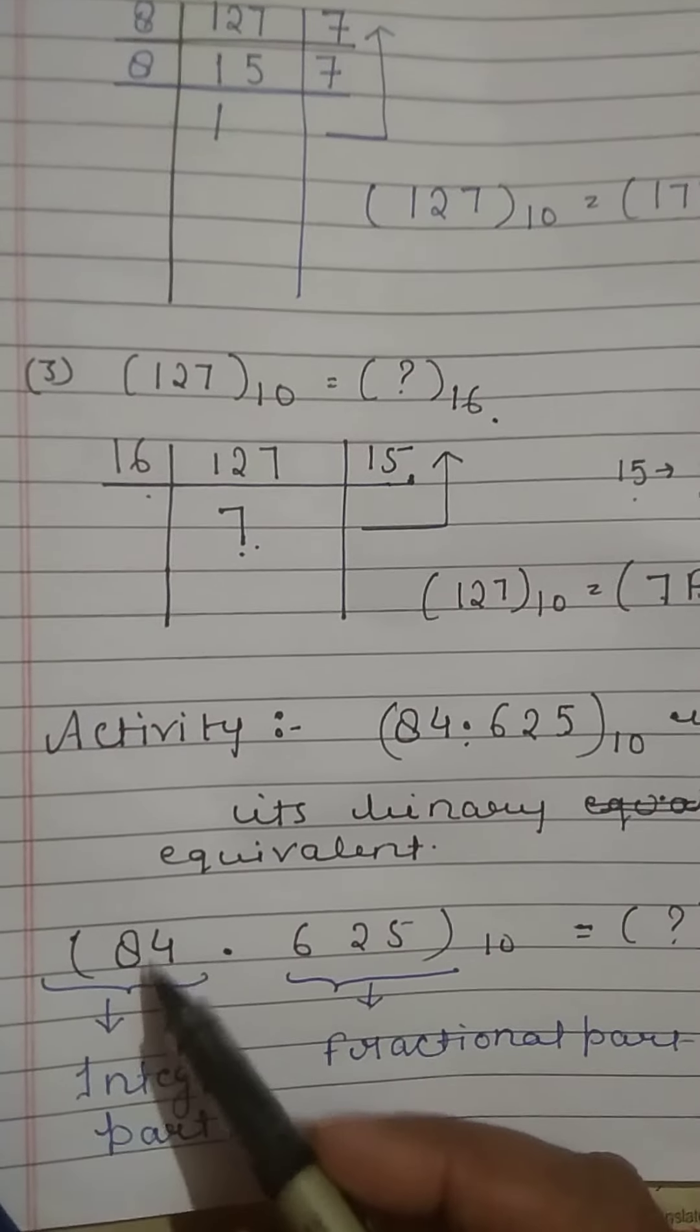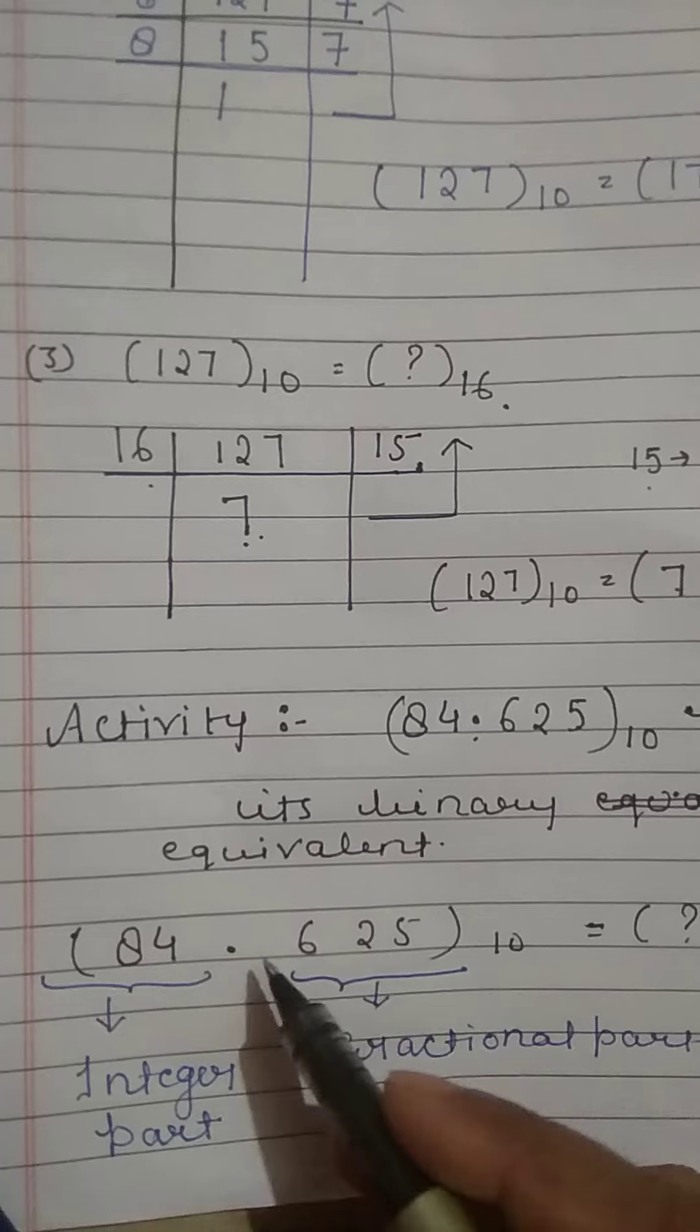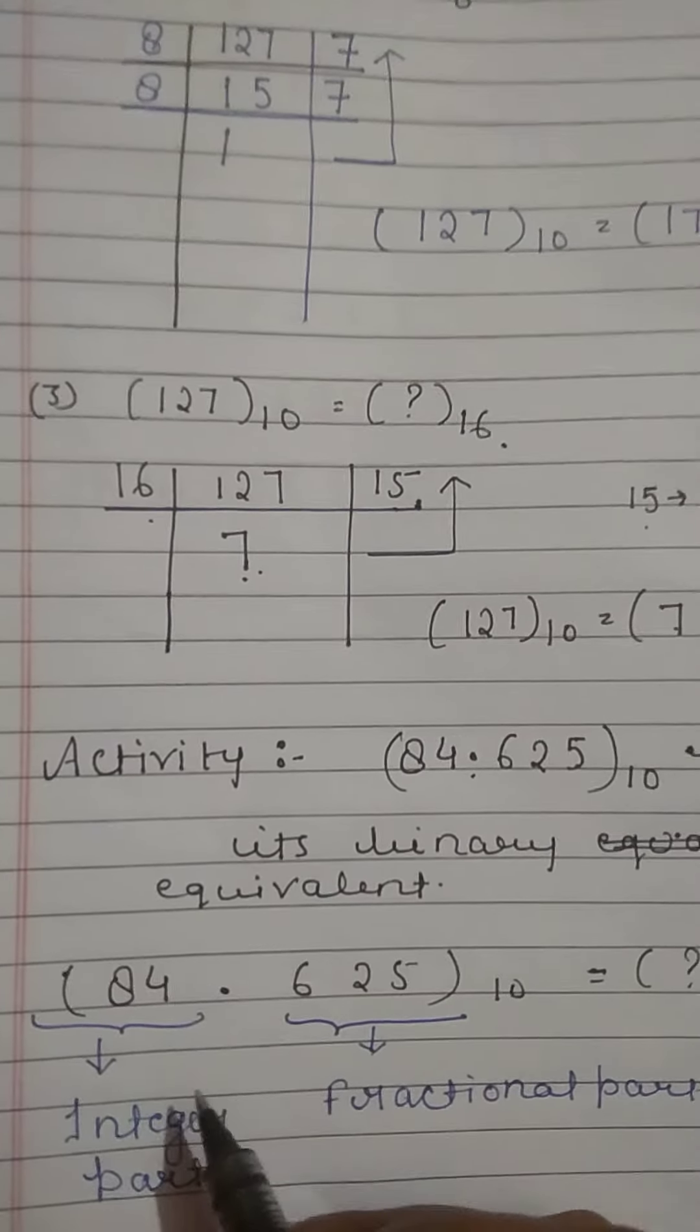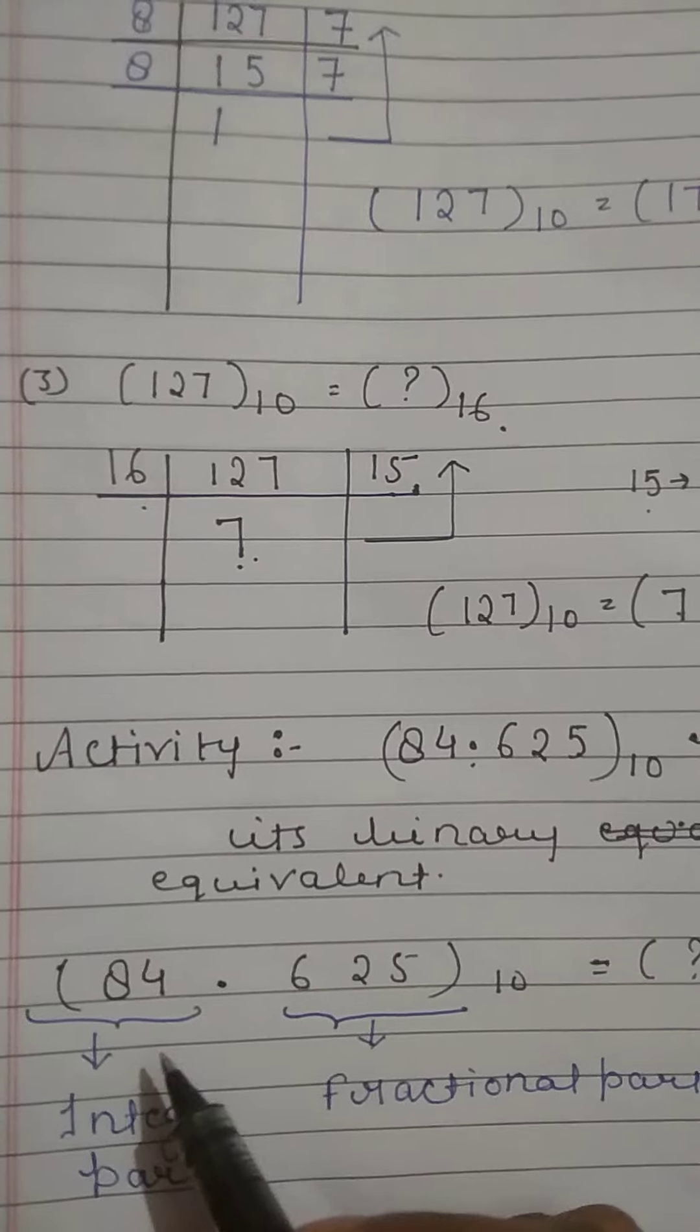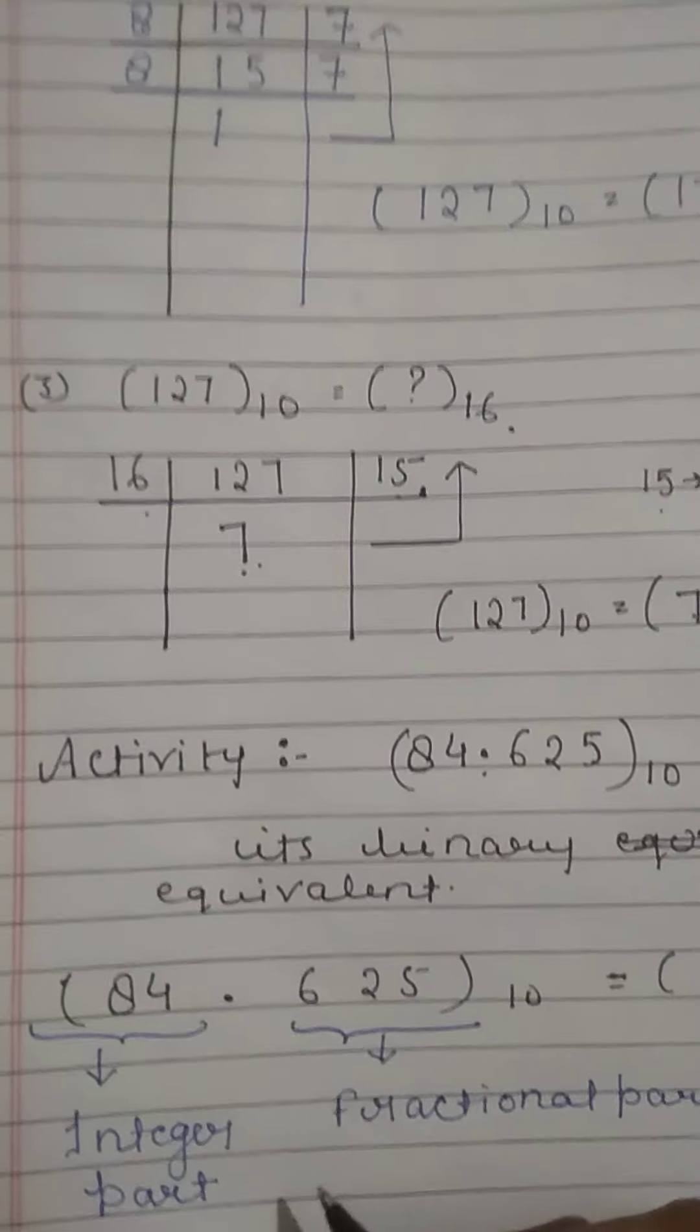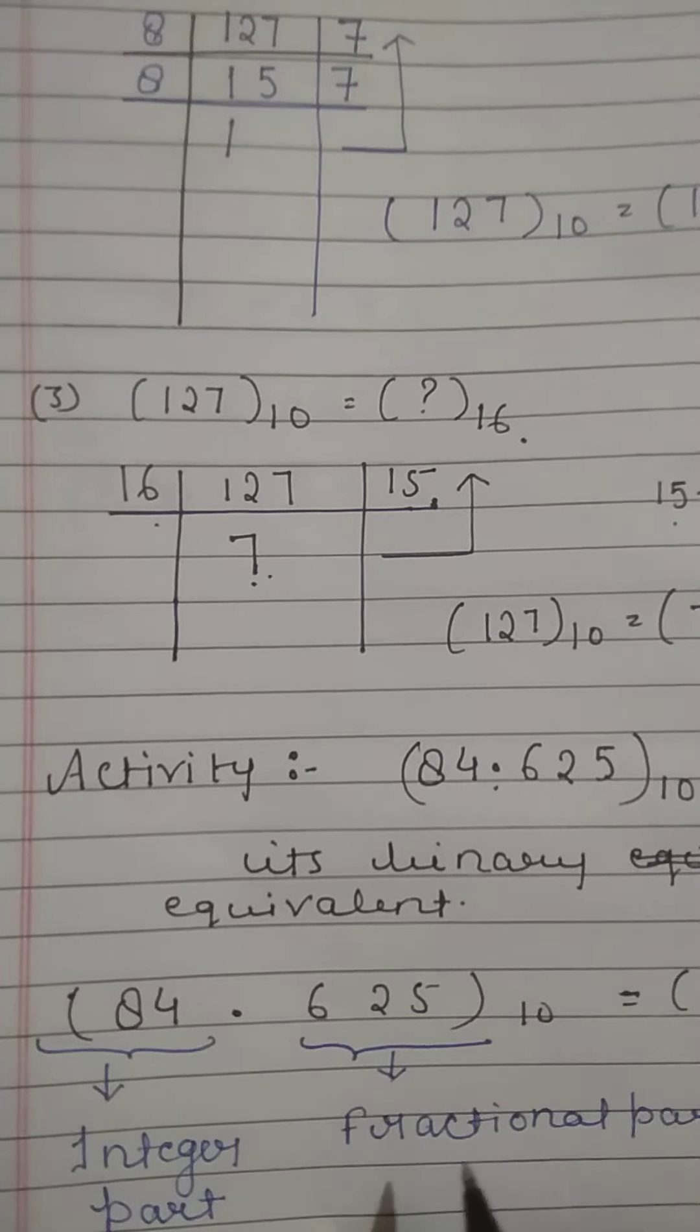Before the point is called the integer part and after the point is the fractional part. We will convert the integer part and fractional part separately to binary. In the next lecture I will tell you how to convert both parts separately.